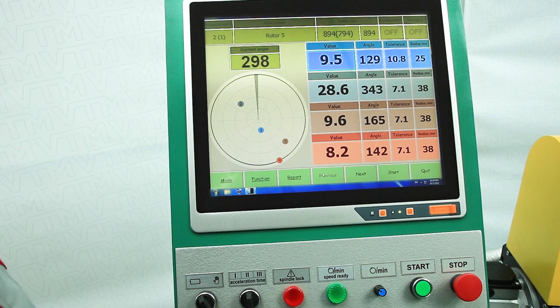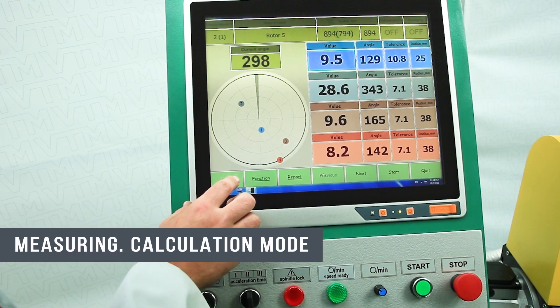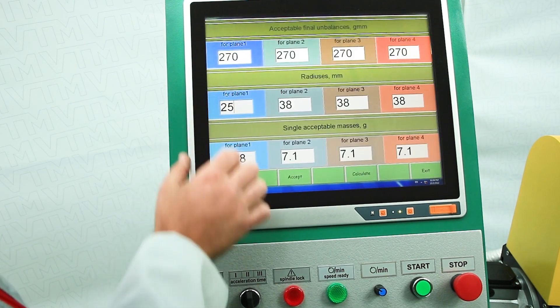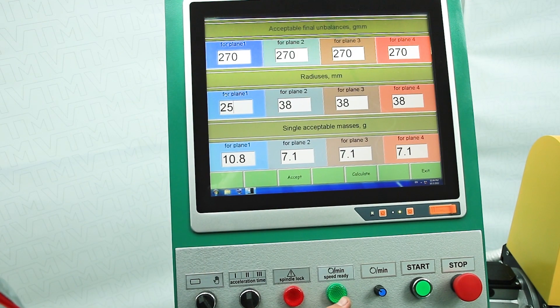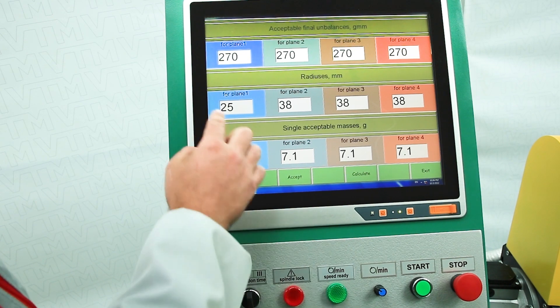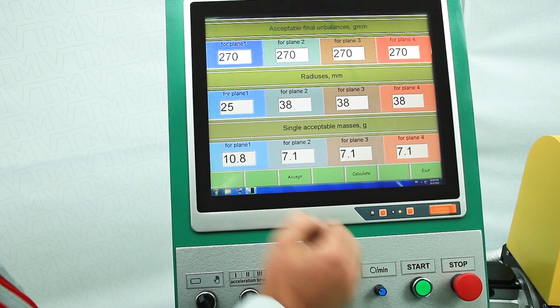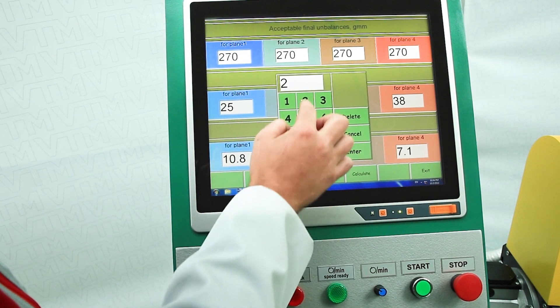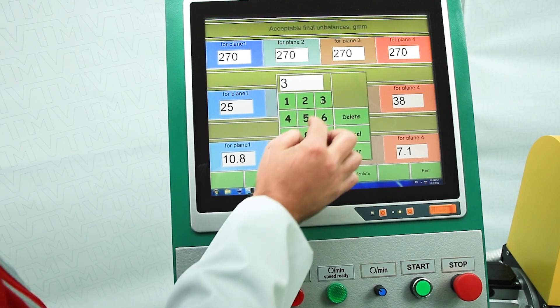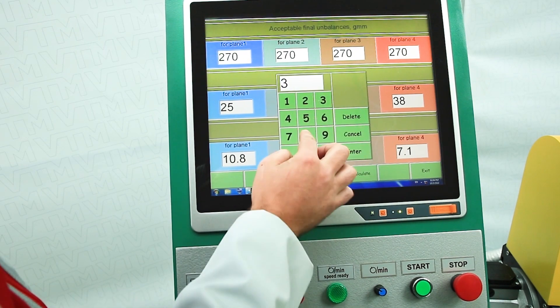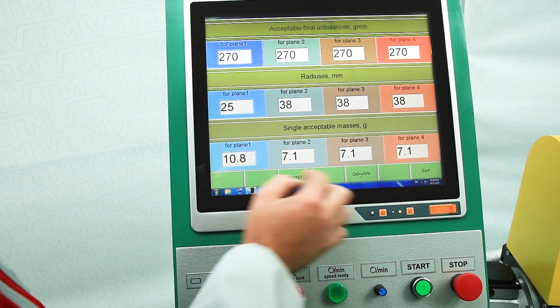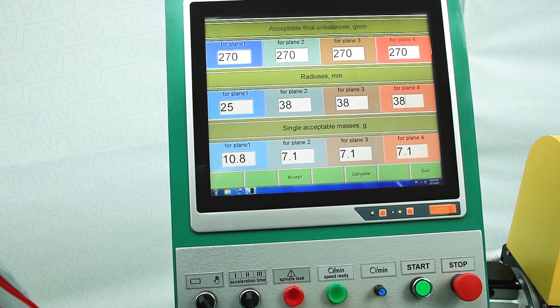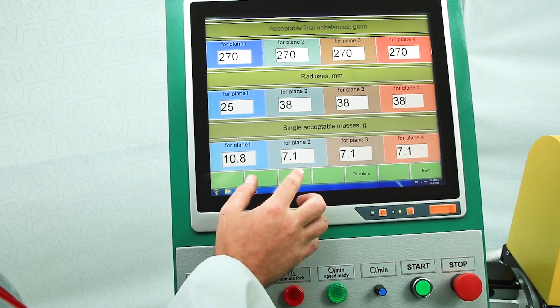To set up the machine on the cardan, you need to enter the mode and select the calculation. In this field, enter the balancing tolerance in grams per millimeter. What tolerance to drive about this will be described in the instructions. Next, we enter the radius of the cardan pipe in this way. And click the calculation button to display the tolerance value in grams. Click the accept button.